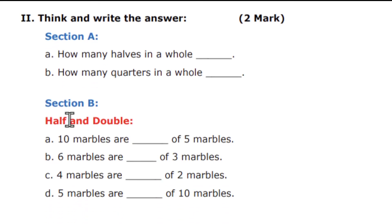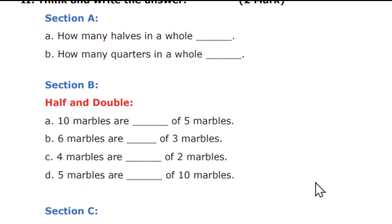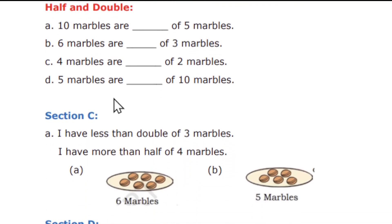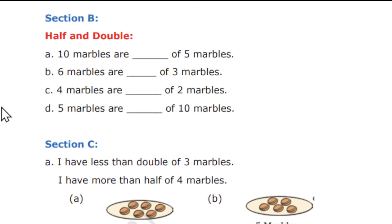Session B is completely from the half and double section. So: 10 marbles are dash of 5 marbles, 6 marbles are dash of 3 marbles, 4 marbles are dash of 2 marbles, 5 marbles are dash of 10 marbles. You can answer these questions — they are very, very simple.